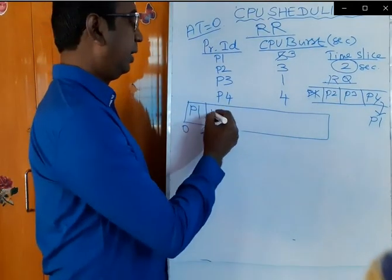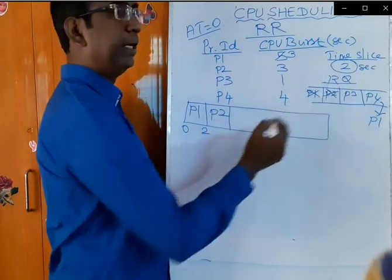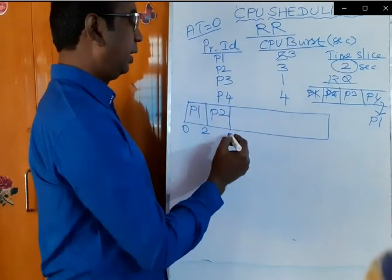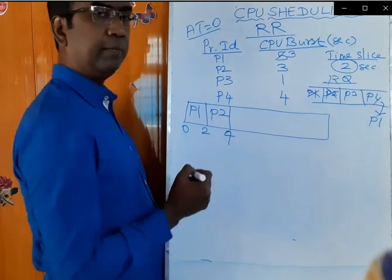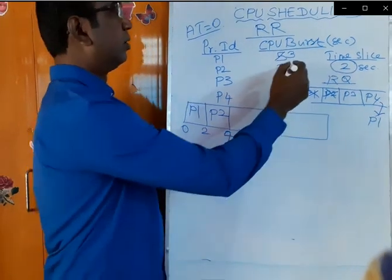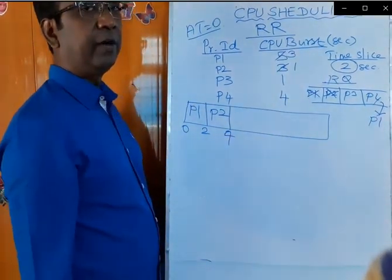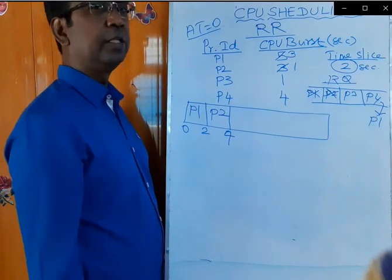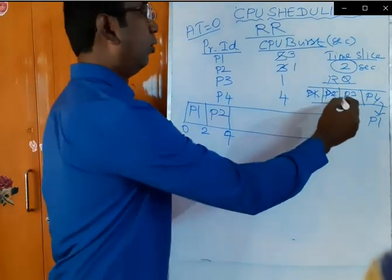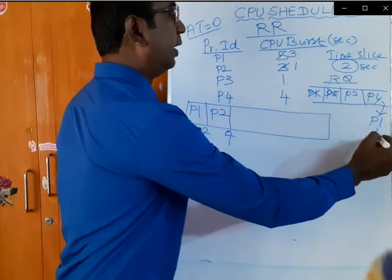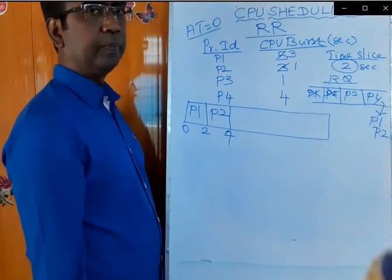Now P2 will enter into the CPU and execute for 2 seconds. The remaining time left for P2 to be executed in the CPU is 1 second. P2 will then be placed at the end of the queue.